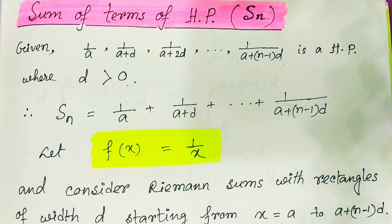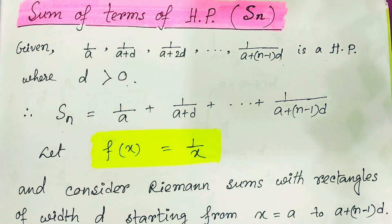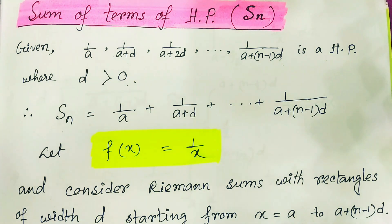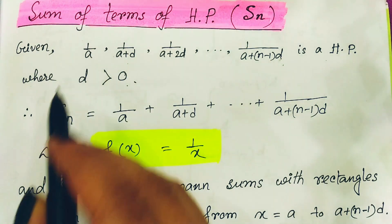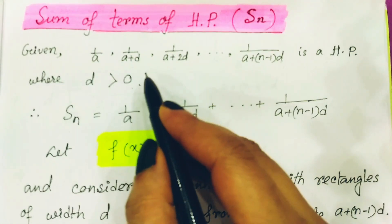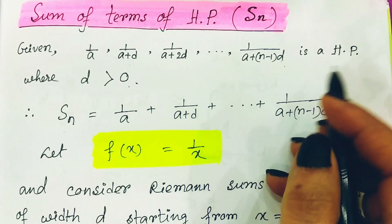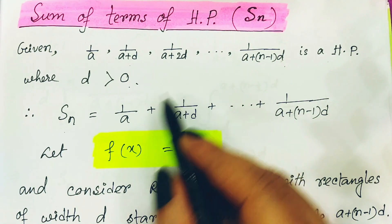Usually the sum of HP is very uncommon. In my previous video on HP, I showed you what the term of its summation is, but how this term comes I did not discuss there, so I am making this separate video. In this video we are going to find out: if a harmonic progression is given, how we will find out its summation. So let us consider an HP: 1/a, 1/(a+d), 1/(a+2d). This is an HP where d is greater than zero.